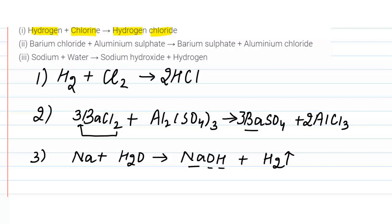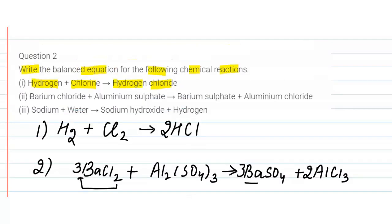We write 2 H₂O on the left-hand side to account for the two hydrogen atoms. Sodium also becomes two atoms on the right-hand side, so we write 2 NaOH. This is our balanced chemical equation. Thank you.